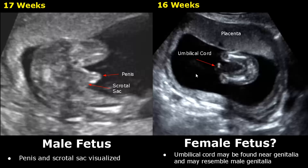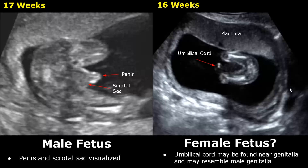Over here is a fetus of 16 weeks gestational age. We do not see the scrotal sac or the penis, but we can see the umbilical cord at this region. This cord can be mistaken for male genitalia, so always take care while scanning the perineum. It is better to wait before declaring the fetal gender.